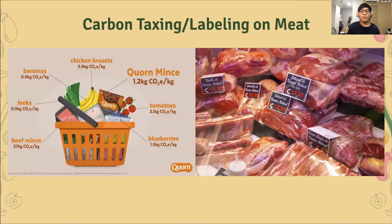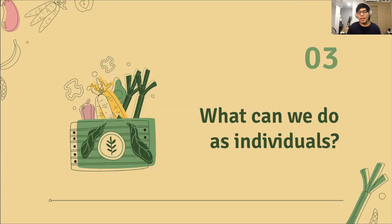The next solution is carbon taxing and carbon labeling on meat — things the government or NGOs can implement. For carbon taxing, we can raise the price of meat depending on the type, cut, and amount being purchased. For carbon labeling, we can create something similar to a nutritional value sticker that indicates how much carbon was produced in order for that piece of meat to reach the consumer. These are measures that individuals cannot do alone — they require action from farmers, governments, or NGOs.